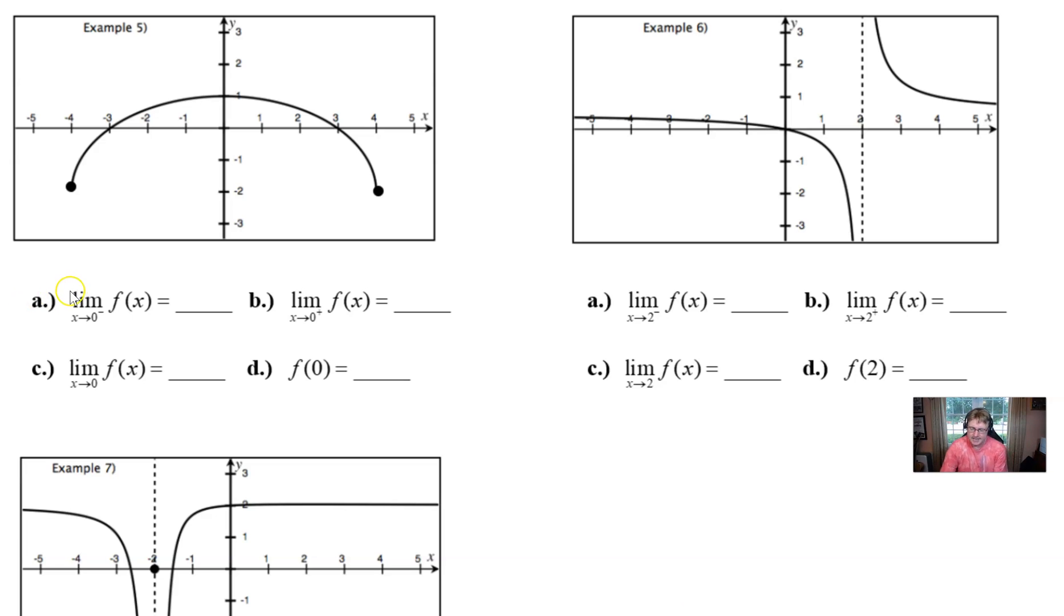So our first limit part A is as X approaches zero from the left side. If we find ourselves traveling on this road and we move towards that value of X that's zero on the left side, we slowly and surely seem to approach this Y value that looks like it's pretty darn close to 1 and that's what we're going to interpret it as. I'm not trying to trick you and say that the answer is 1.01 or 0.99. That would be a pretty dirty trick.